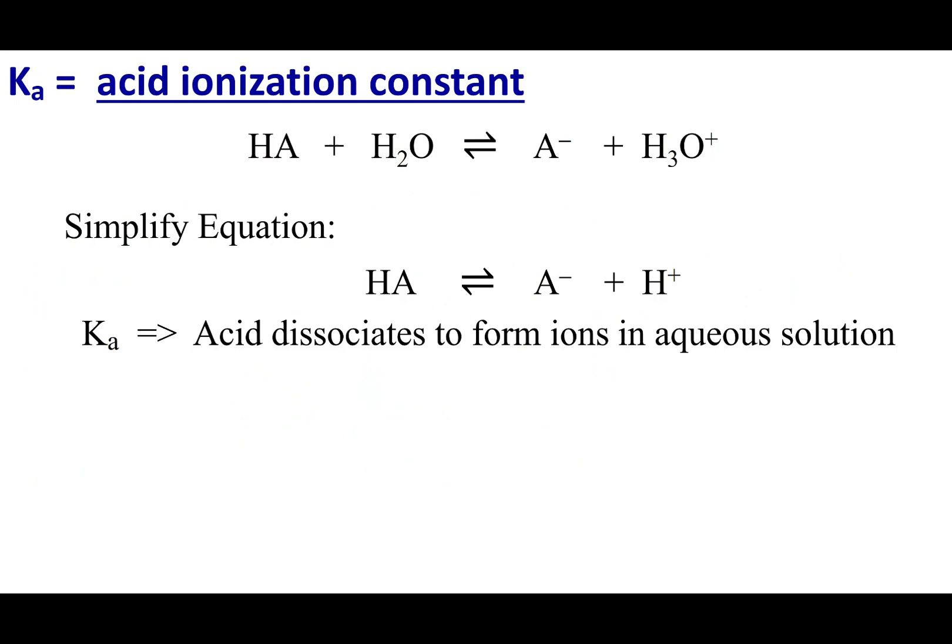Now, you'll note that those weak acids use the equilibrium arrow. And so, we just discussed a whole bunch of stuff on equilibrium last chapter. And so, we're going to bring some of that material into this chapter. What I'm going to talk about now is something called Ka. This is the acid ionization constant.